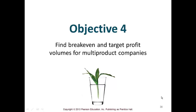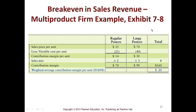Let's talk about break even and target profit with a multi-product example from exhibit 7-8. Here you have regular posters and large posters, with variable cost, sales price, and contribution margin per unit for each, plus your sales mix. Remember, sometimes one product might show a loss but overall the product line is profitable. The weighted average contribution margin per unit: $70 plus $90 equals $160, divided by 8, gives you $20. That $20 should fall between $14 and $30 — that's how you gut-check yourself.